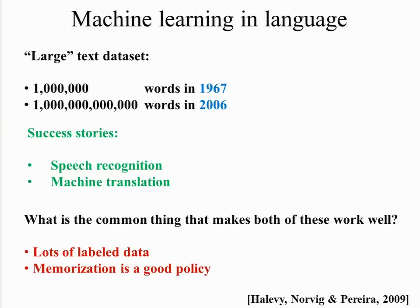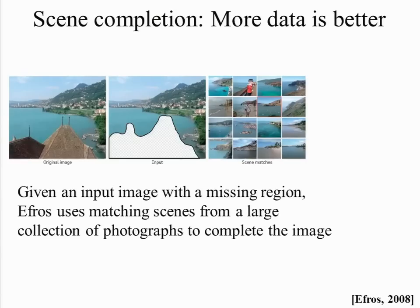Machine translation is also one of those things where machines translate for you, and if you don't like the translation you can correct it — and every time you correct Google Translate, it gets better. Google Translate is an amazing product: it makes foreign pages accessible. The key, as the Google people point out, is that you need lots of data. In this case, memorization — being able to record every new example, every correction — is a good strategy.